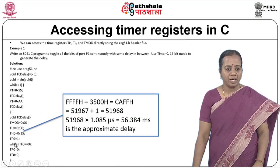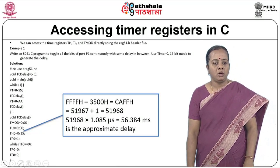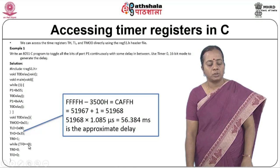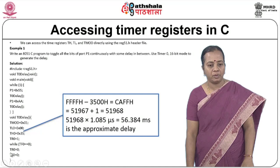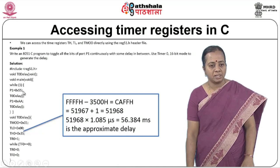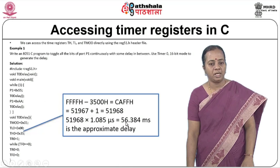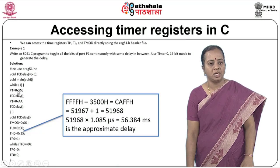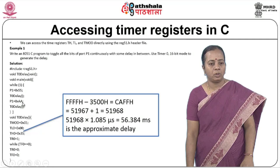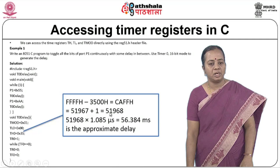After setting the initial count, TR0 = 1 starts the timer. We then loop while(TF0 == 0) — staying in the loop until TF0 becomes 1, indicating overflow. Once TF0 = 1, we set TR0 = 0 to stop the timer and TF0 = 0 to clear the overflow flag. This generates the 56 millisecond delay. P1 is first set to 0x55 (10101010), and after the delay P1 = 0xAA, completing the LED toggle.